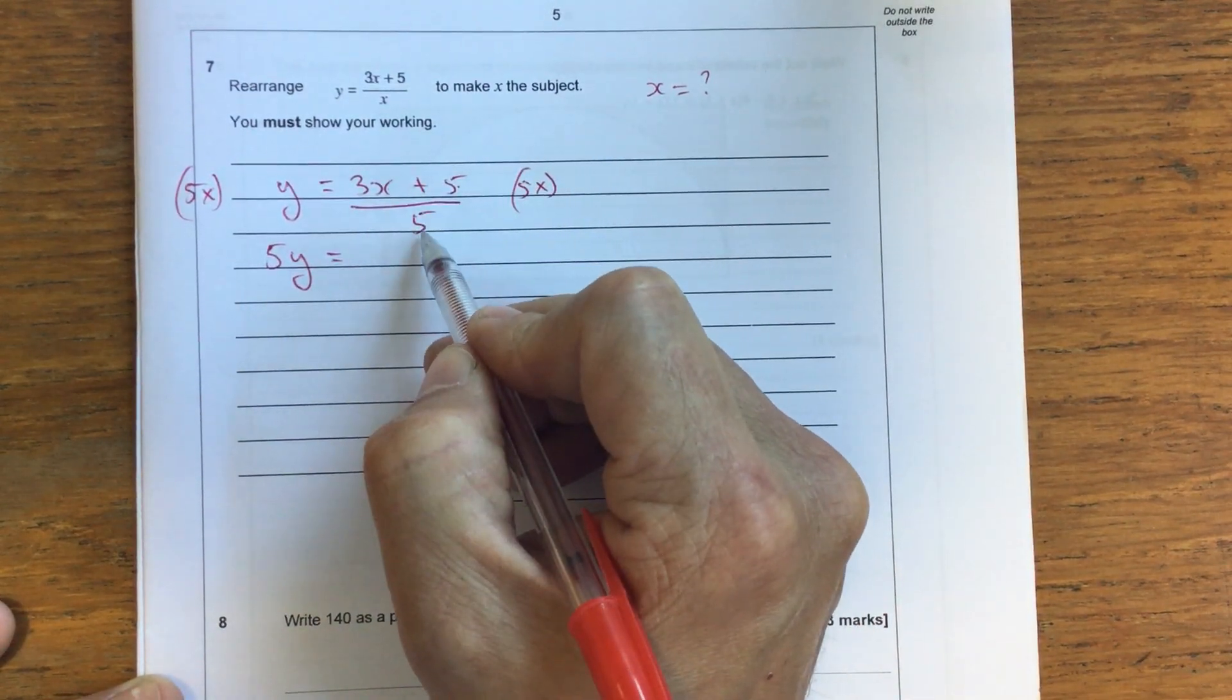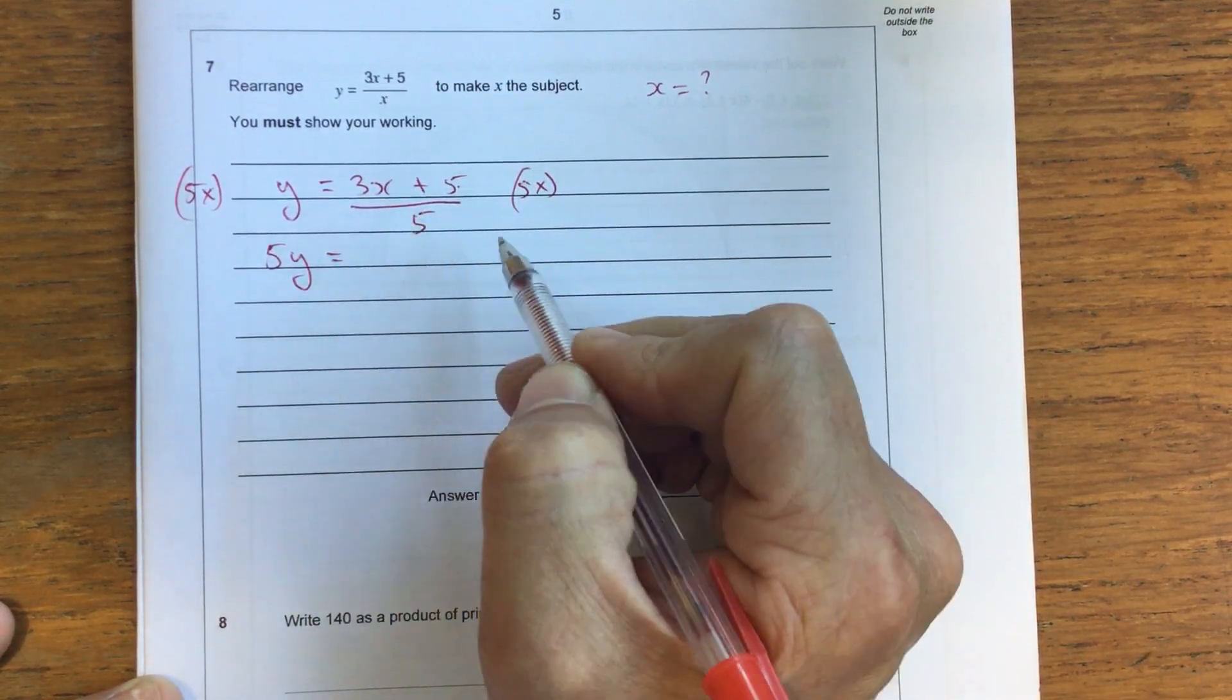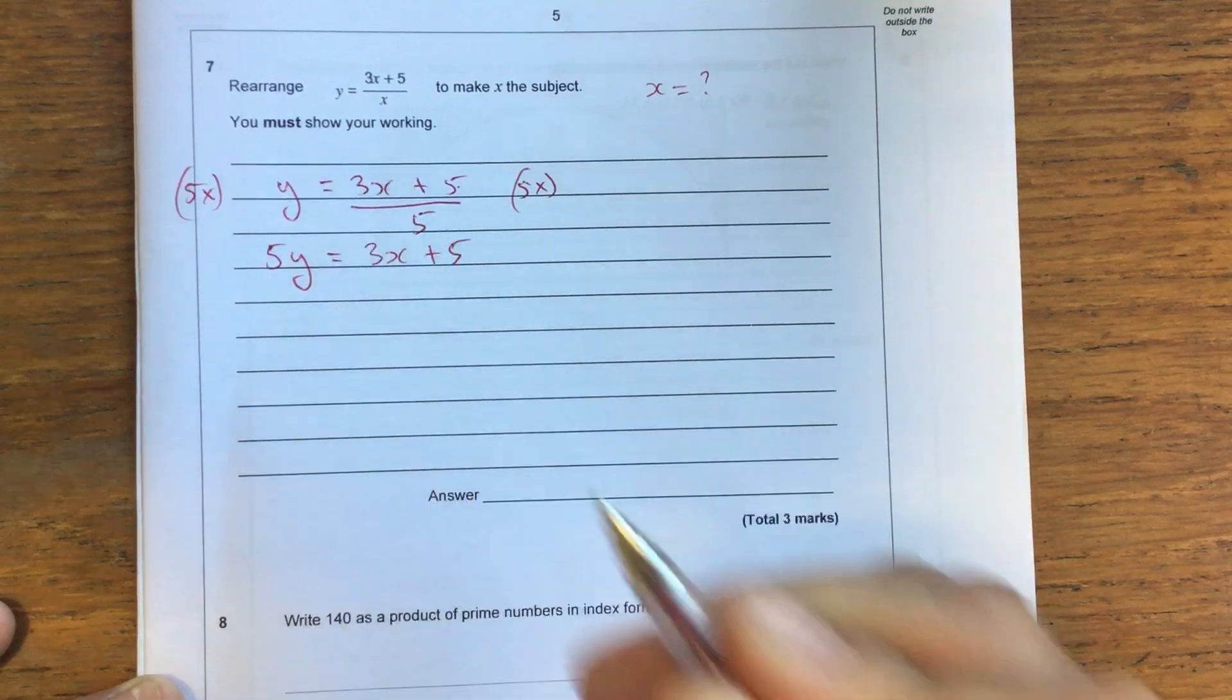Now 5 times something divided by 5, these 5s are going to cancel out because 5 over 5 is 1. So I'm left with 3x plus 5.